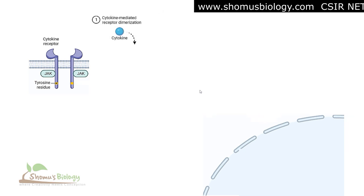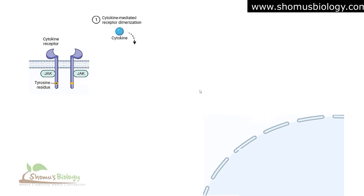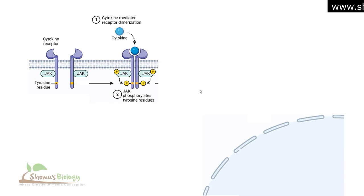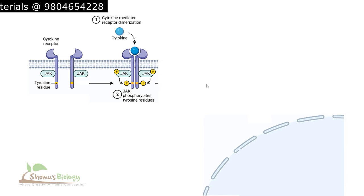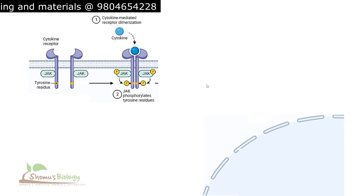Cytokine-mediated receptor dimerization occurs when the cytokine — the signaling molecule — binds to the JAK-associated cytokine receptor, causing it to dimerize. Upon dimerization, autophosphorylation of JAK occurs, and then JAK phosphorylates the tyrosine residues. This is referred to as cross-autophosphorylation.